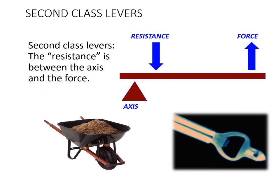For second class levers, the resistance is in the middle of the three components. The axis and force can be on either side — as long as resistance is in the middle, it's a second class lever. The two examples shown are a wheelbarrow and a bottle opener. Before moving on, try to identify the axis, resistance, and force in those two images.